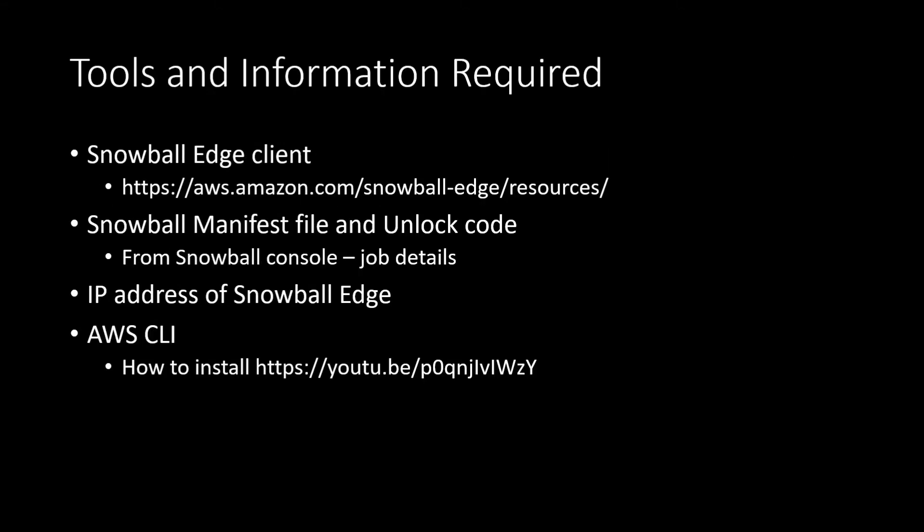In order to do that, we need some tools and some information. The first tool is the Snowball Edge client. The second one is the Snowball Edge manifest file and the unlock code. Also, the IP address of the Snowball Edge, which we get when we connect the Snowball Edge to our LAN or local network. The fourth item is AWS CLI, which we can download and install.